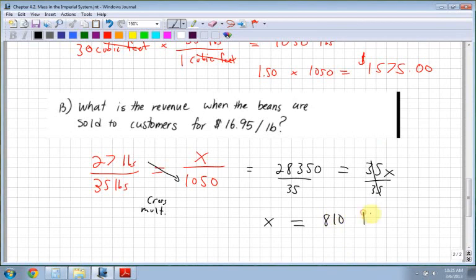Now that's 810 pounds. Because for 27 pounds of roasted, there are 35, or sorry, 27 pounds for the roasted. There were 35 pounds of unroasted.